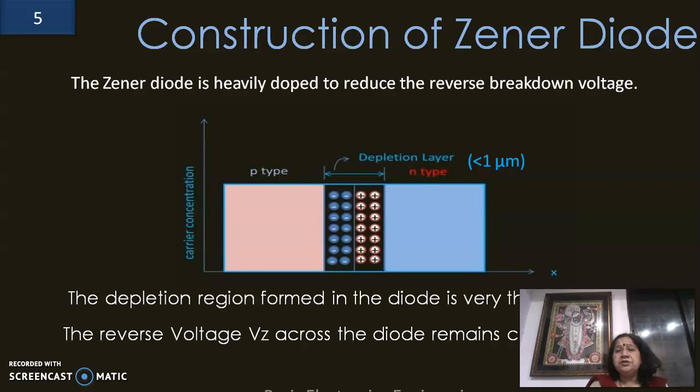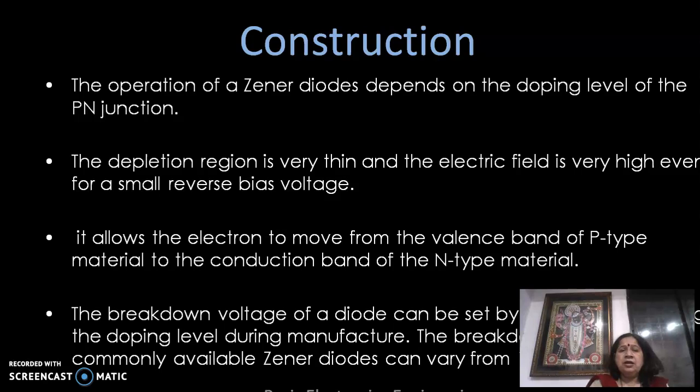Construction of zener diode: a zener diode is heavily doped to reduce the reverse breakdown voltage. Here we have the P and N type regions, and the depletion layer is very thin — in the case of a zener diode it is less than one micrometer. The reverse voltage Vz across the diode always remains constant.